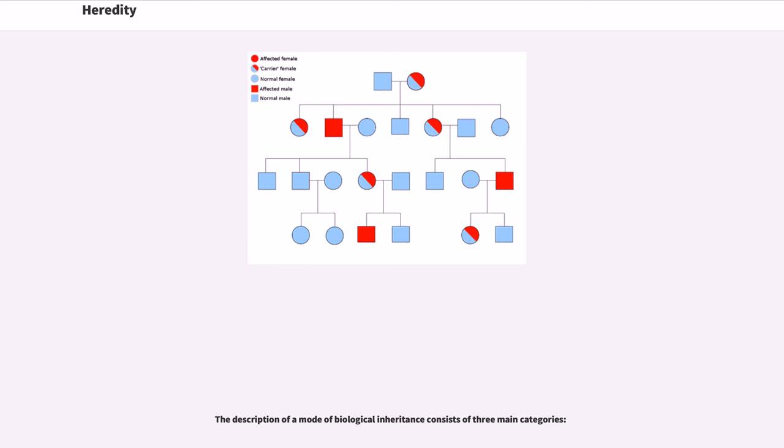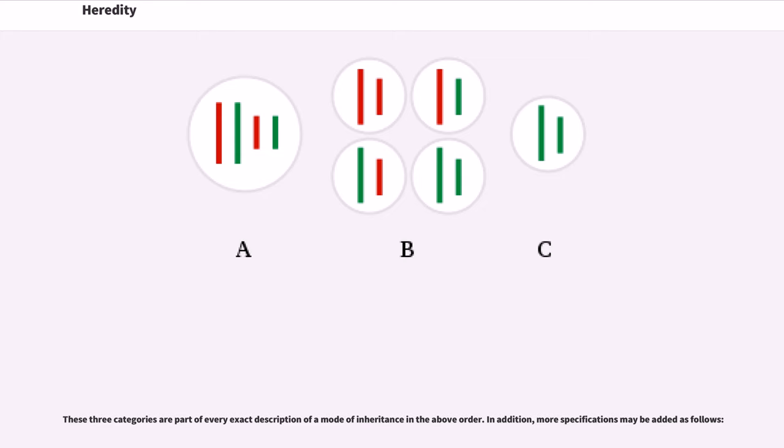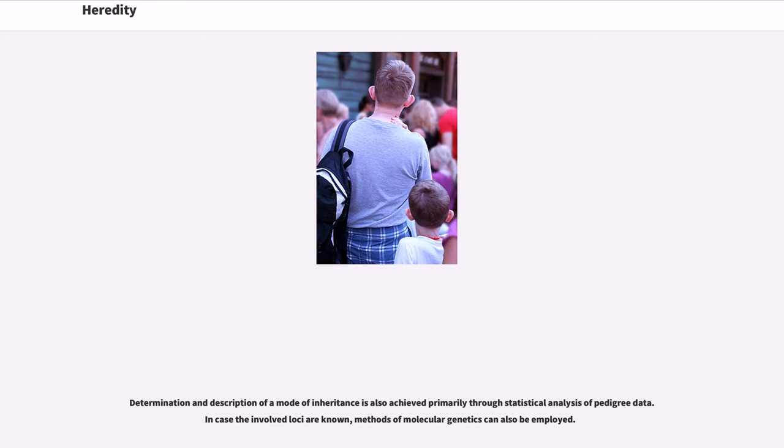The description of a mode of biological inheritance consists of three main categories. These three categories are part of every exact description of a mode of inheritance in the above order. In addition, more specifications may be added as follows. Determination and description of a mode of inheritance is also achieved primarily through statistical analysis of pedigree data. In case the involved loci are known, methods of molecular genetics can also be employed.